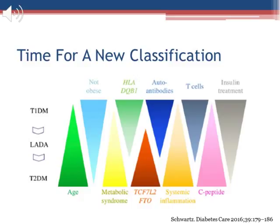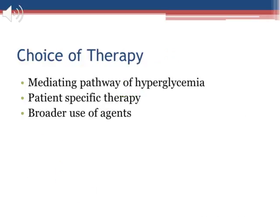If you're asking yourself why does this all matter anyway — if you think about how we treat type 1 diabetes versus type 2 diabetes, they are completely different. Classification is going to affect your treatment, which may not always be 100% correct. Patients diagnosed with LADA who retain endogenous insulin production may receive default insulin when other treatment options with fewer ADRs could be utilized. It has been proposed that the choice of therapy should be based on particular mediating pathways of hyperglycemia present in each individual patient, providing broader use of existing agents for maturity onset diabetes of the young, stress-related, and steroid-induced diabetes. We are going to talk about the 11 contributing factors that lead to the development of diabetes.